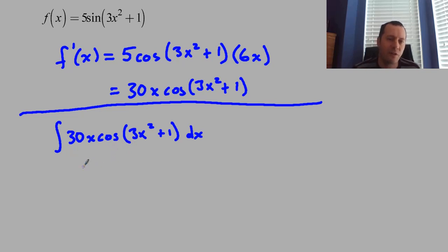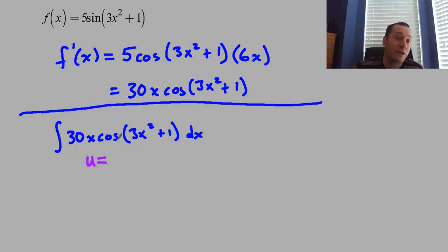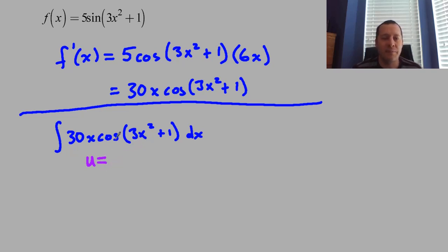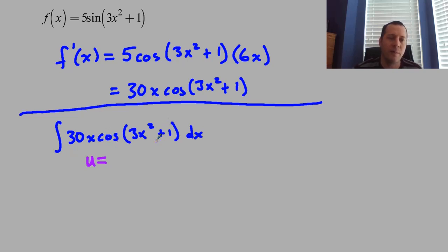A very typical substitution is to let u equal the inner function—we tend to use u for the substitution, although that's not a rule. You can substitute with anything, but u is very common. Looking at this integral, what jumps out at me is the cosine of stuff. So I'm going to let u equal the stuff—the 3x² + 1.